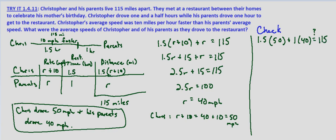1.5 times 50 is 75. 1 times 40 is 40. Add those together and we do get 115 equals 115. So that does verify that Chris drove 50 miles per hour and his parents drove 40 miles per hour.